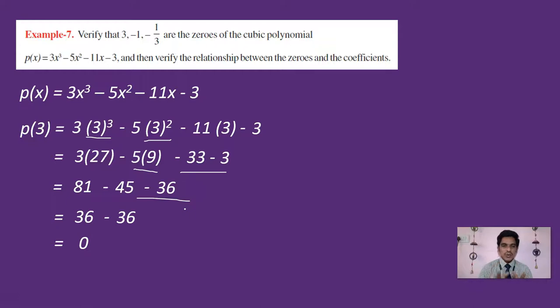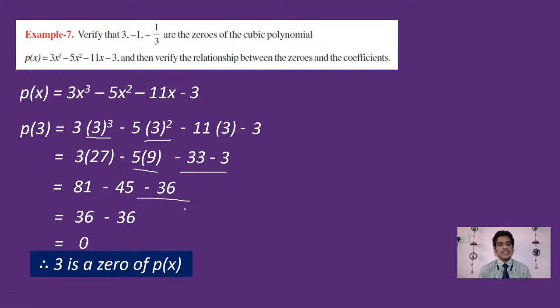When we substitute x = 3 in the polynomial we get 0. This means that 3 is a zero of P(x). So we have verified the first zero.